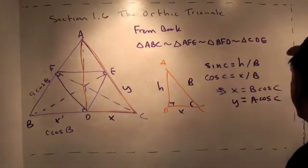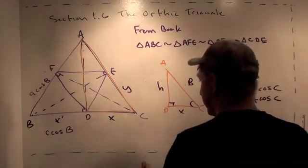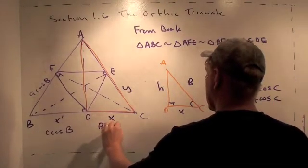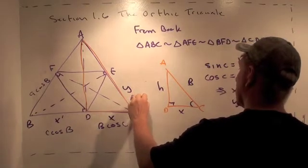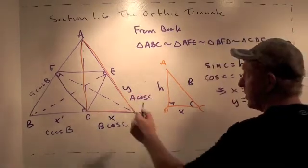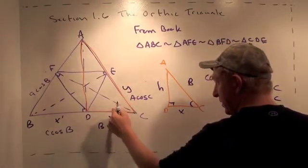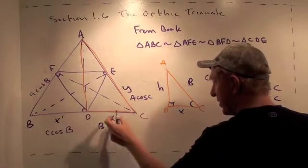So I have a bunch of triangles here. This is B cosine C, this is A cosine C. In relation to the big triangle ABC, I have the same internal angle and sides that are in proportion.